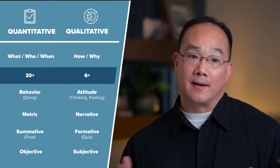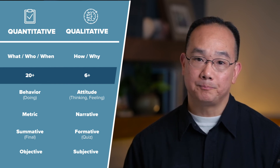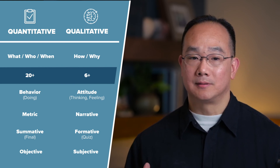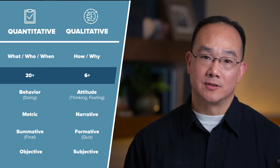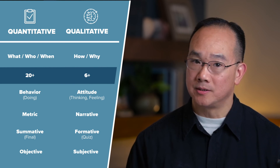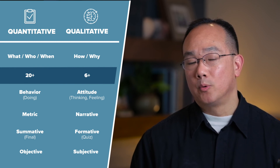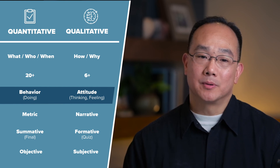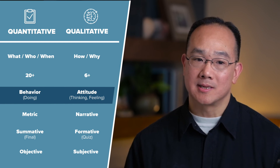With qualitative data, you could have about six participants, and you tend to find there are diminishing returns after six users, given that you're in a distinct user group without too much diversity between user types. With quantitative, you're really studying behavior — what is the action, what did they do? With qualitative, you're really looking at attitude — what are they thinking, what are they feeling, even what are their sentiments?